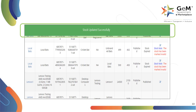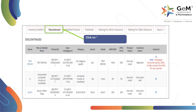Stock will be updated and the OEM or reseller's own offering corresponding to the discontinued catalog will be removed. To view all discontinued catalogs, click on the discontinued tab after selecting search my offerings within catalog.